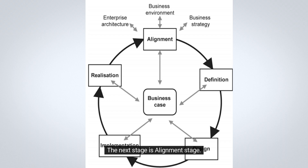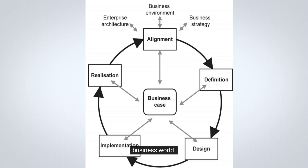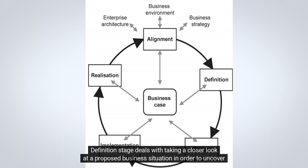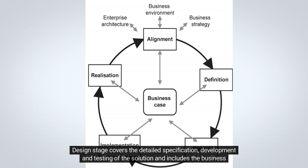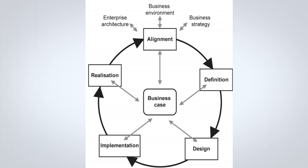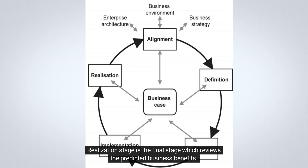The diagram shows the stages of the business change life cycle. The alignment stage is concerned with ensuring the organization's objectives and strategy are aligned with the external business world. The definition stage deals with taking a closer look at a proposed business situation in order to uncover root causes of problems. The design stage covers the detailed specification, development and testing of the solution and includes the business processes as well. The implementation stage involves planning and preparation for the deployment of business changes. The realization stage is the final stage which reviews the predicted business benefits.